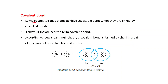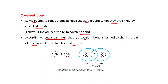Covalent bond: Lewis postulated that atoms achieve the stable octet when they are linked by chemical bonds. Langmuir, another scientist, introduced the term covalent bond. According to Lewis-Langmuir theory, a covalent bond is formed by sharing a pair of electrons between two bonded atoms. You can see — this is one chlorine atom, this is another chlorine atom. When both are bonded, they are bonded by sharing of one electron pair, and in this way both achieve the octet.